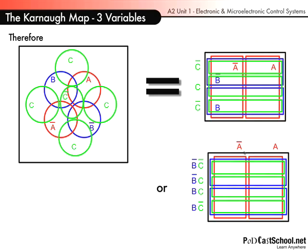Bringing those outside, you've got A bar and A. And down the side we've got B bar C bar, B bar C, B C and B C bar. Now some of you will notice something already about the pattern of this.